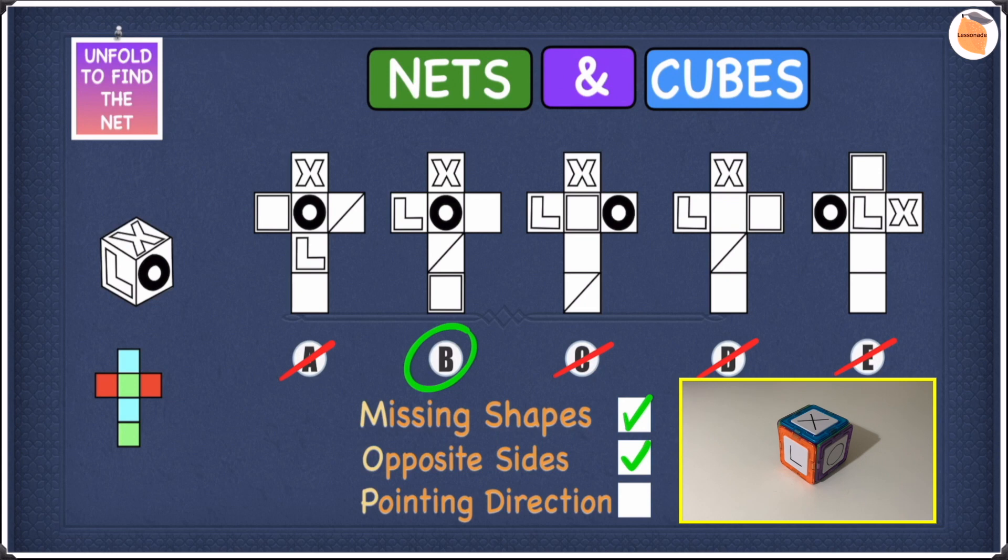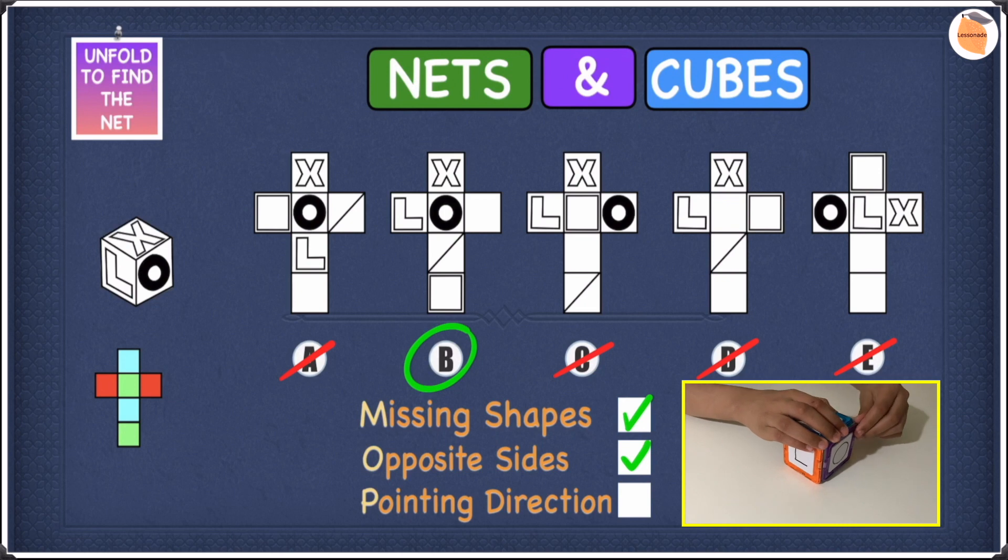So let's check if B is right by unfolding the cube. And as you guys could see this net is exactly like B. So this means our answer for this question is B.